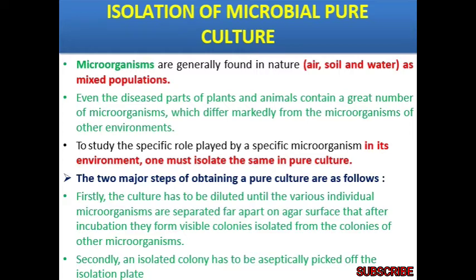Microorganisms are basically found in nature — in air, soil, and water. That is called a mixed population. Even the diseased part of a plant or animal contains a great number of microorganisms which differ markedly from microorganisms of other environments. It is very clear that whenever any type of injury takes place in plants or animals, there is a great number of microorganisms which differ markedly from the environment.